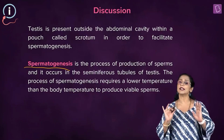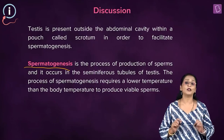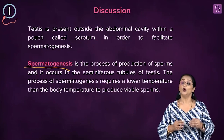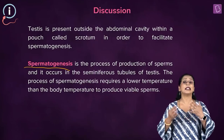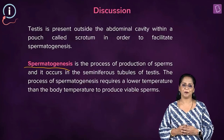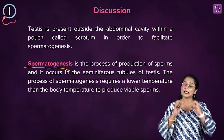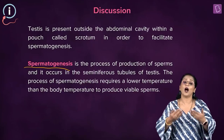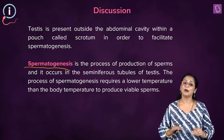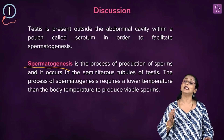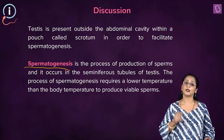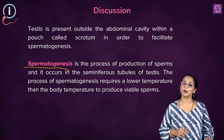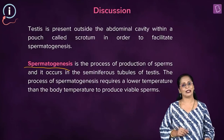Spermatogenesis takes place in the testis, and for spermatogenesis to occur, the temperature has to be about 2 to 2.5 degrees lower than the normal body temperature. Because of this, the testis is found in the sac-like structure called the scrotum outside the body, maintained at this lower temperature to facilitate the production of sperms.